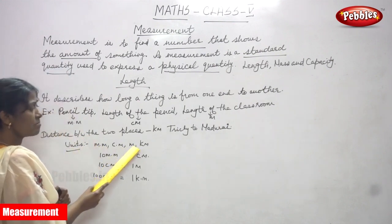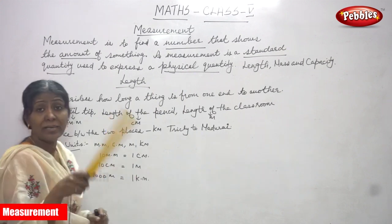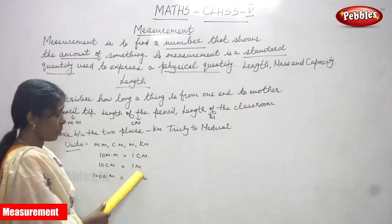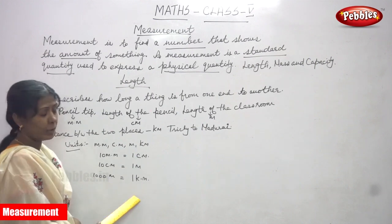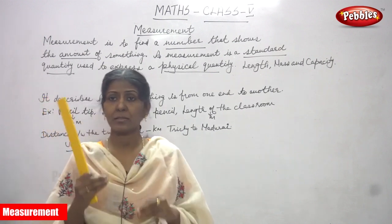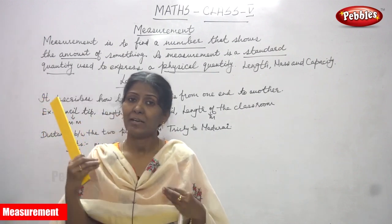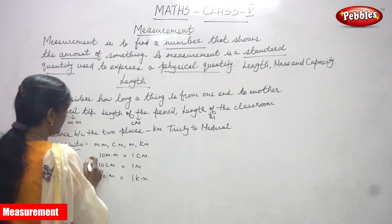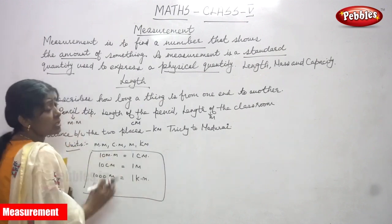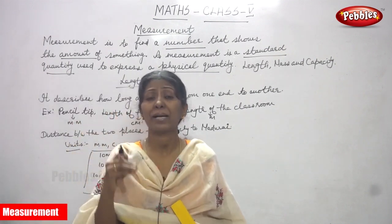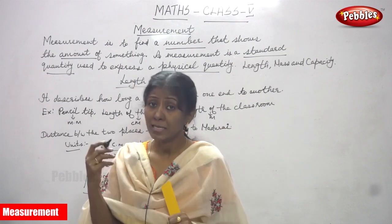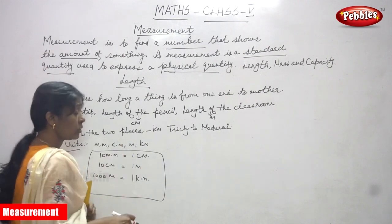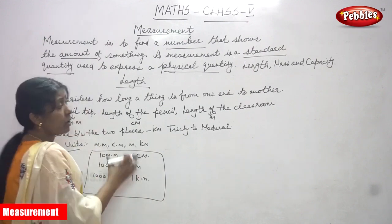Now the formulas for length: 10 millimeters is equal to 1 centimeter; 100 centimeters is equal to 1 meter; and 1000 meters is equal to 1 kilometer. You must memorize these formulas because we apply them when solving problems. So remember: 10 millimeters = 1 centimeter, 100 centimeters = 1 meter, and 1000 meters = 1 kilometer.